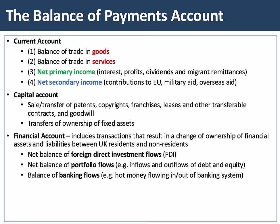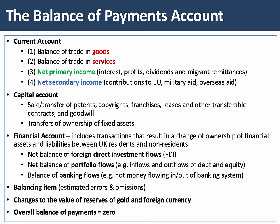The key point is that the balance of payments must balance. We have a balancing item in the figures to incorporate estimated errors and omissions from the data, and countries also make adjustments via the IMF to the value of their reserves of gold and foreign currency. When they do that, it helps the balance of payments overall to sum to zero.